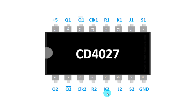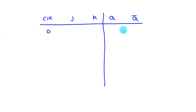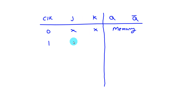Now let's see the truth table of JK Flip Flop. Clock, J, and K are the three inputs. Q and Q bar are the outputs. Whenever clock is 0, then in the output we will get the previous state — that is memory — and both J and K inputs are don't care. If clock is 1 and both J and K are 0, then also we will get memory, that is the previous state.